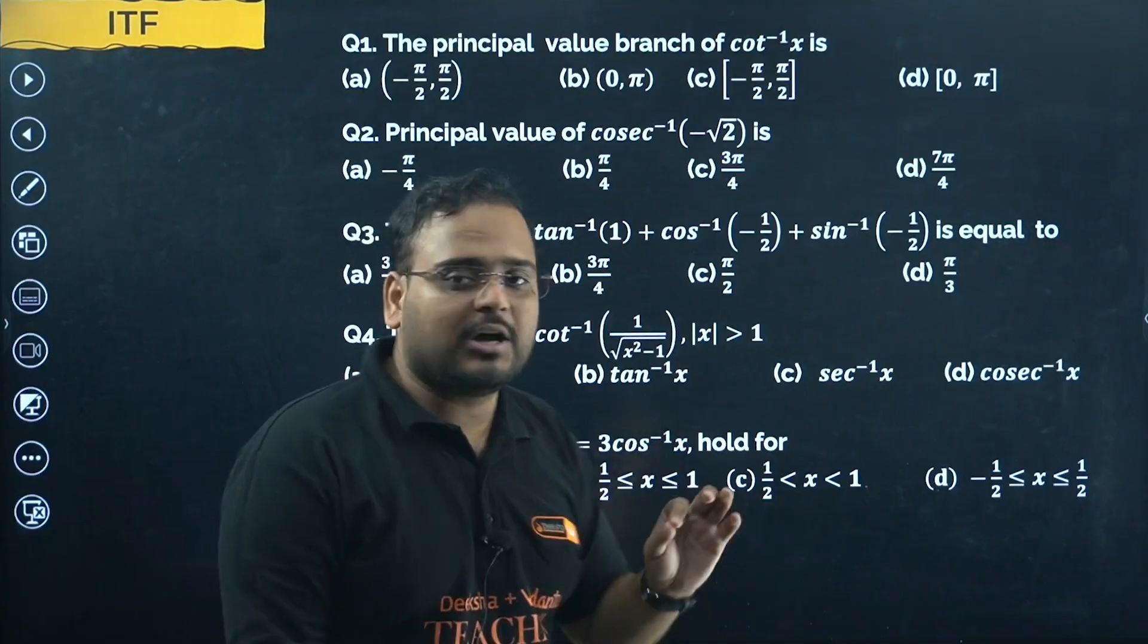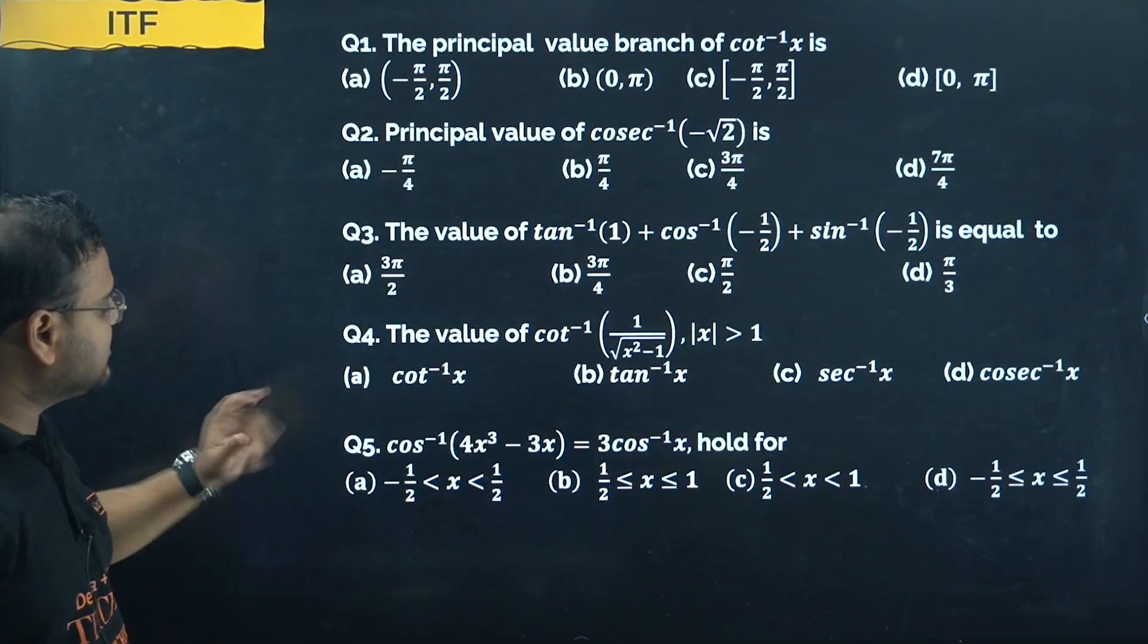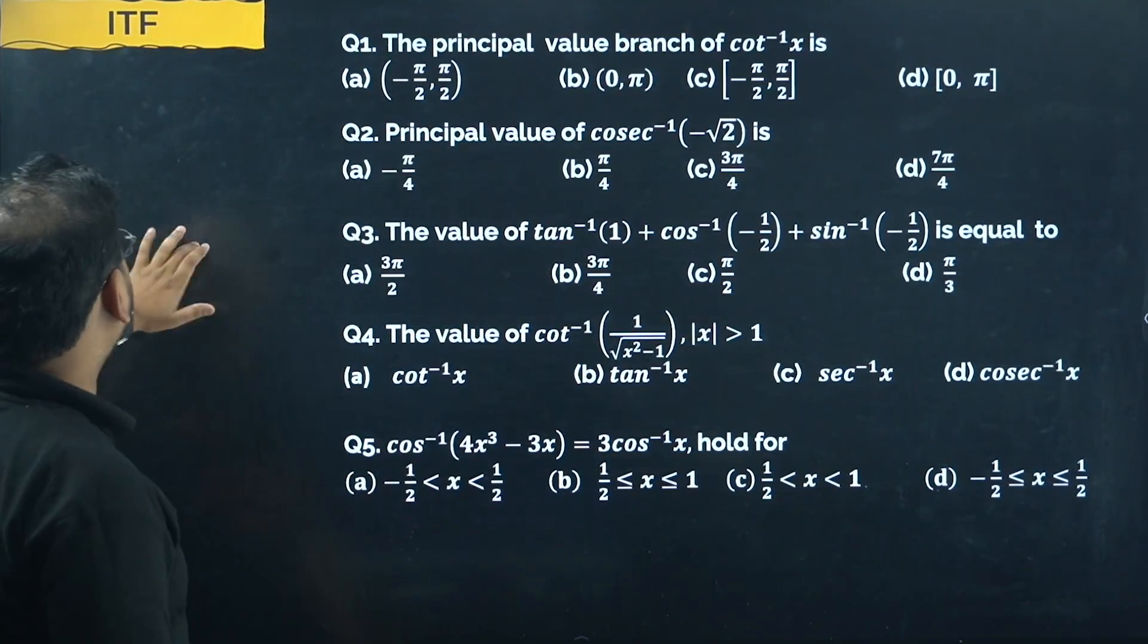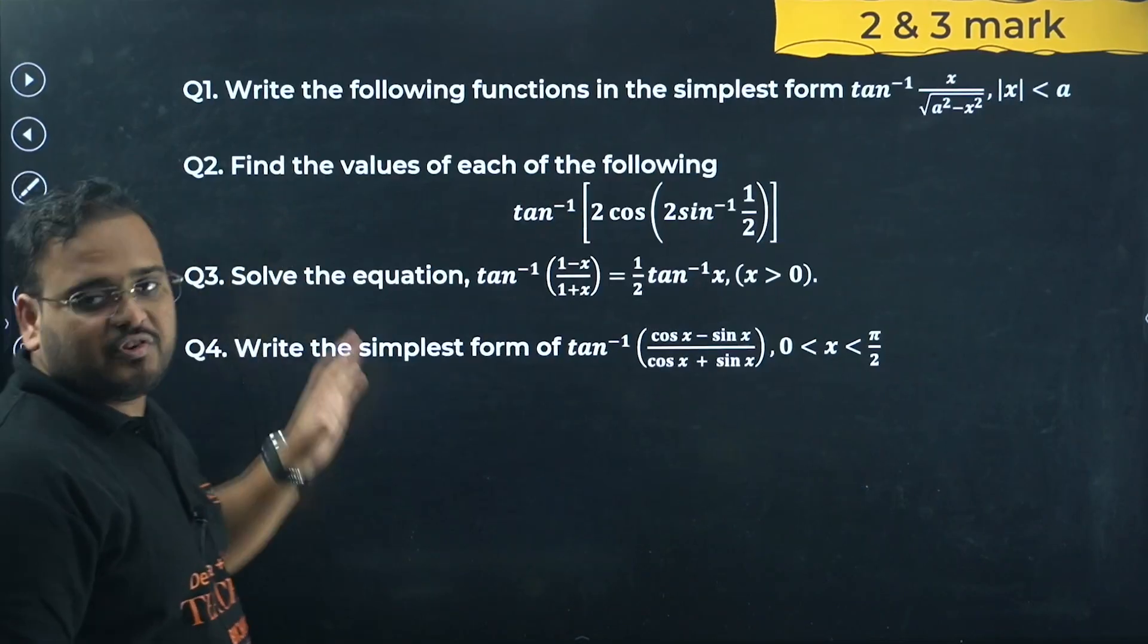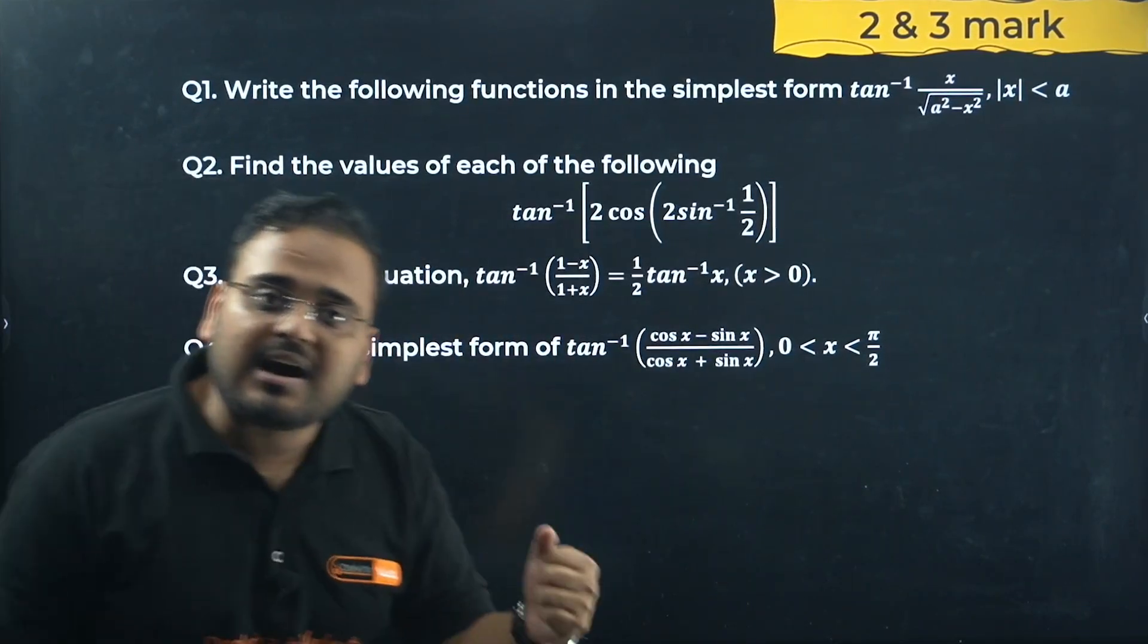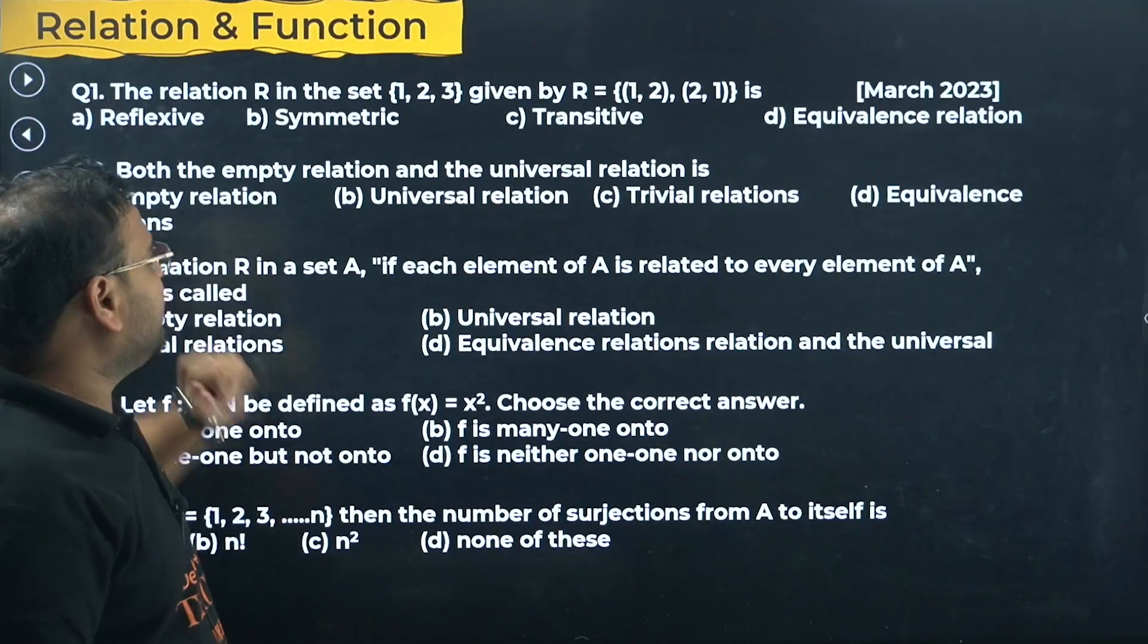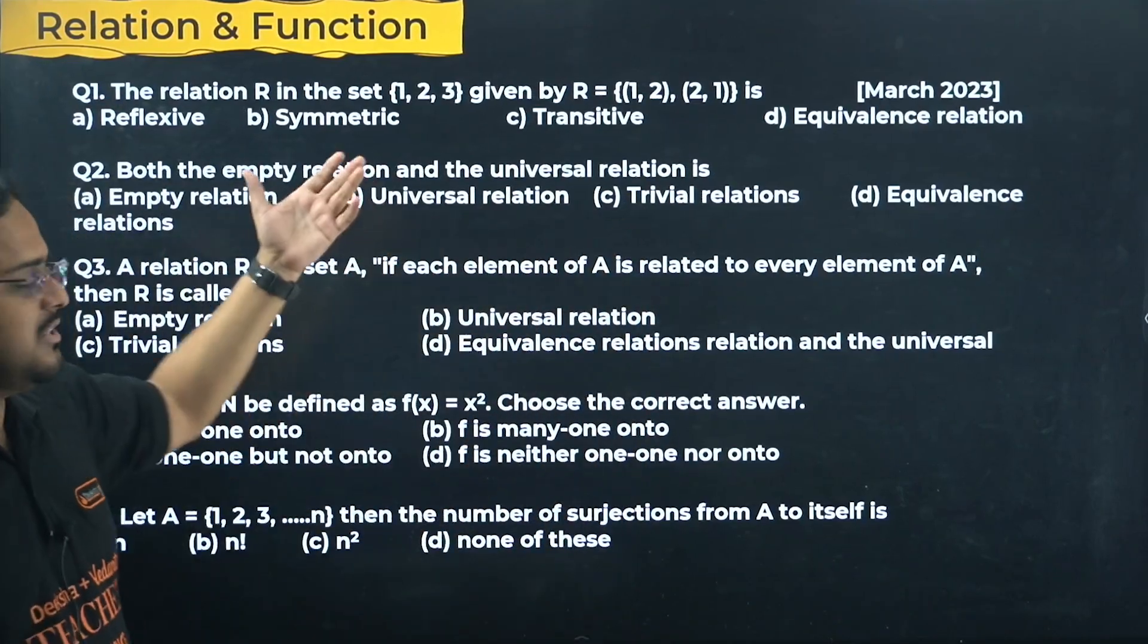Moving on with the session right now. We have the principal value branch of cot inverse for example. I'm not going to discuss the questions. There are a list of questions for ITF. You can see five questions I've taken on the MCQ side, then I move ahead with two and three markers because this chapter has only two and three markers being asked apart from MCQs. Moving on, relation and function - again I've taken a list of questions you can see over here.